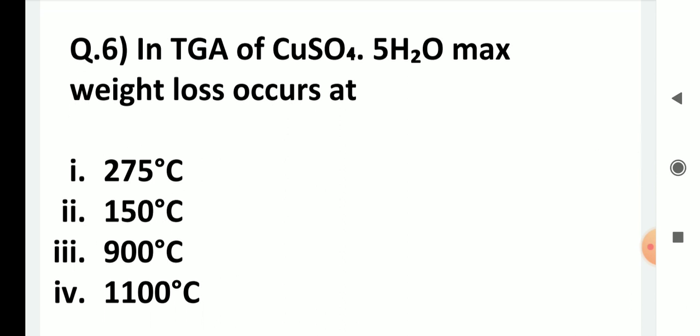In a TGA of copper sulfate pentahydrate (CuSO₄·5H₂O), maximum weight loss occurs at which temperature — 275, 150, 900, or 1100 degrees? At 150°C, CuSO₄·5H₂O is converted to CuSO₄·1H₂O, with a loss of four molecules of water. That weight loss is 4 × 18 = 72 mass units, which is the maximum compared to the other reactions occurring at 275, 900, and 1100 degrees. So the answer is 150 degrees.